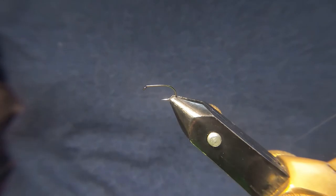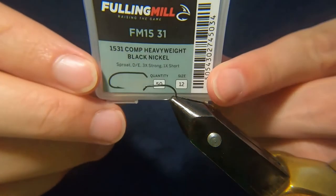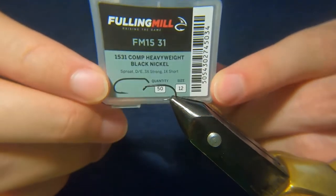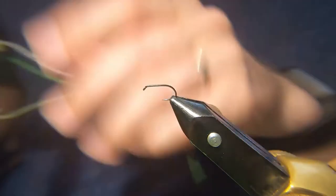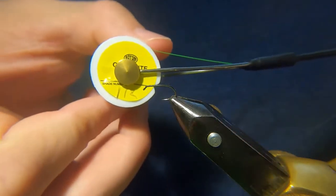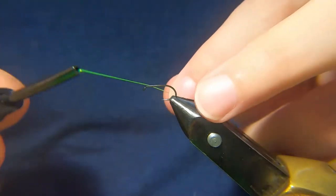Hi guys, welcome back. In the vise we've got a Fulling Mill competition heavyweight, size 12, and for the thread initially we're going to be using just a glow bright number 12, just to form a wee butt.